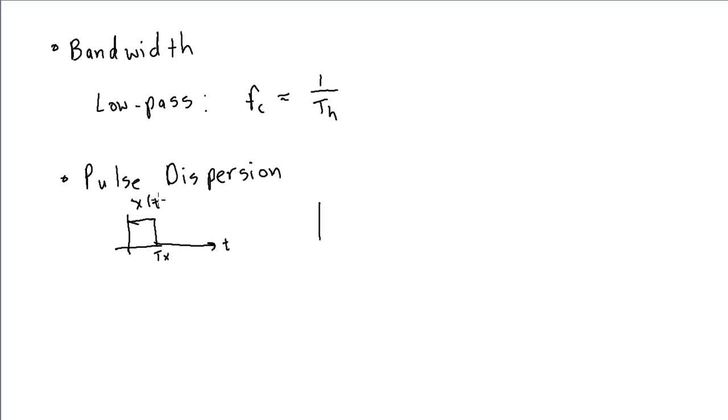so this is my x of t, I transmit this through a system with impulse response of width th. Again, I can determine the output. We know that the output will look something like this,